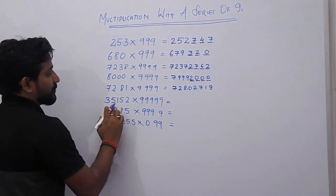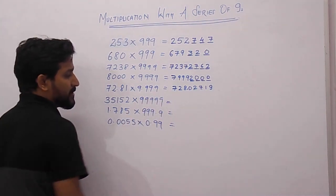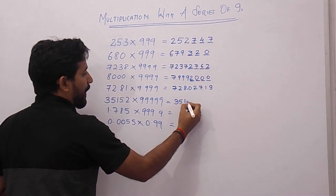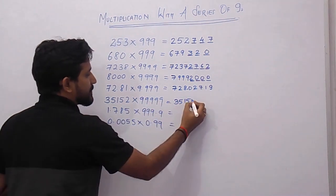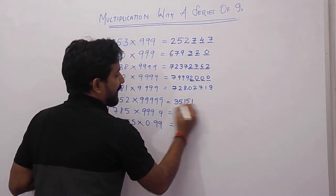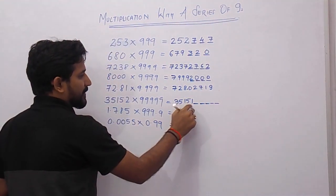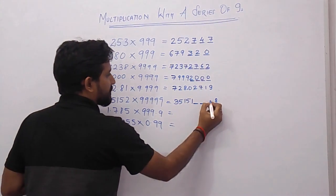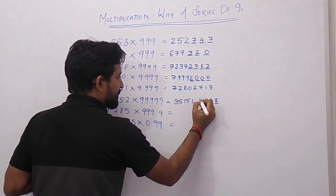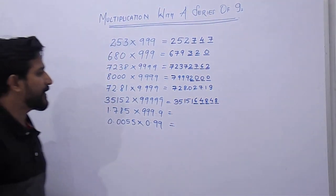Another example with 5 digits: 35152 × 99999. Follow the same step — decrease by 1 to get 35151. Since it is a 5-digit number, put 5 spaces and fill with the 9's complement: 9 minus 1 is 8, 9 minus 5 is 4, 9 minus 1 is 8, 9 minus 5 is 4, 9 minus 3 is 6. So the answer is 3,515,164,848.